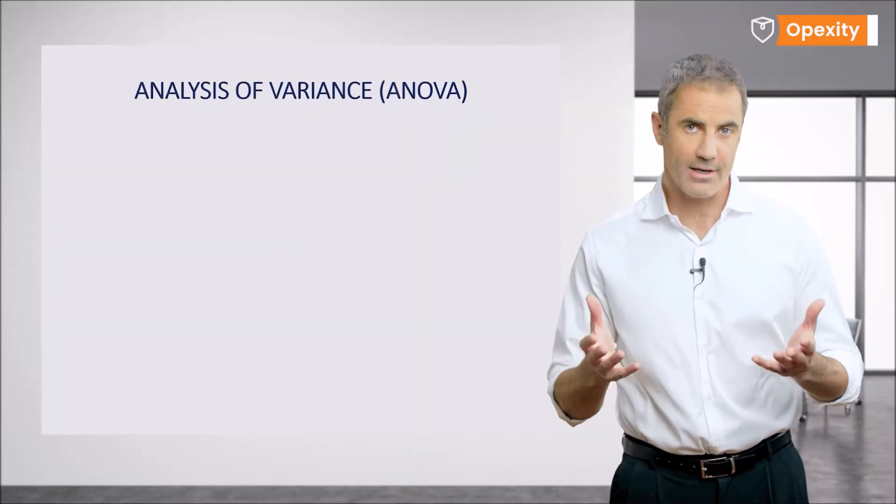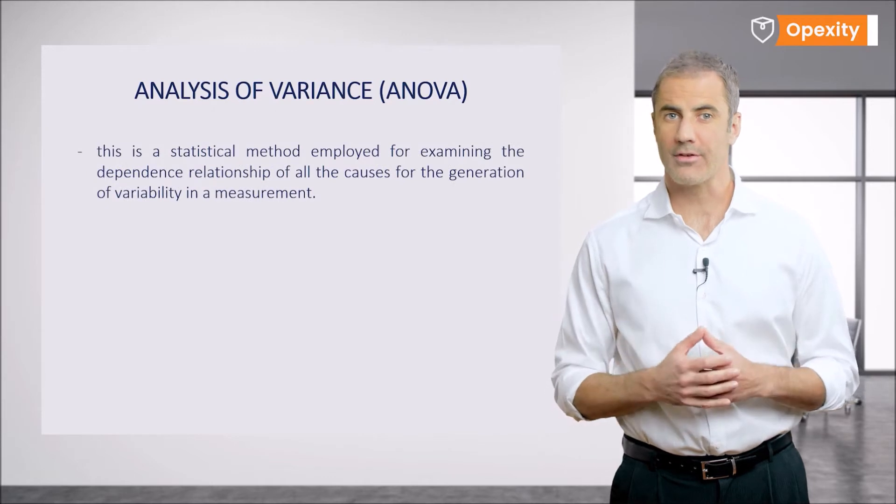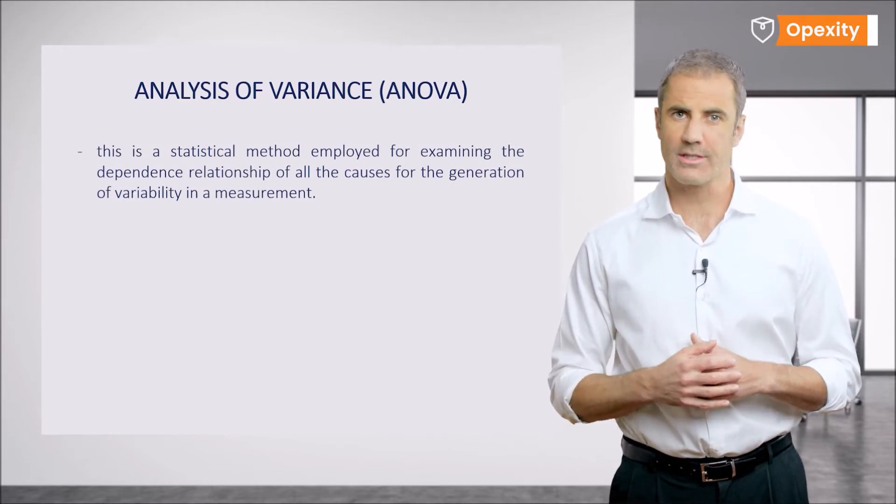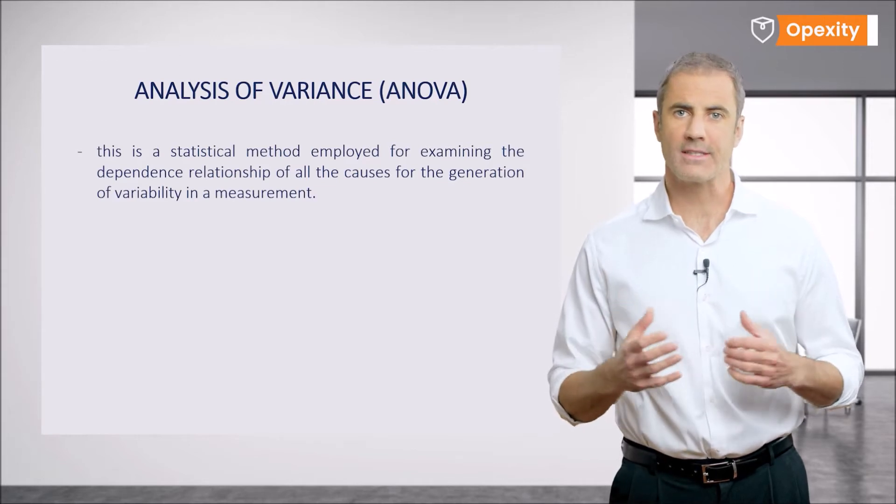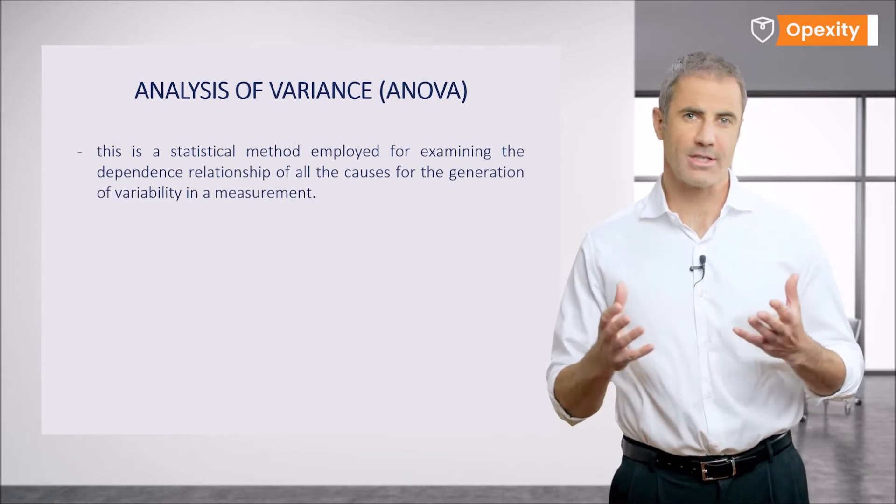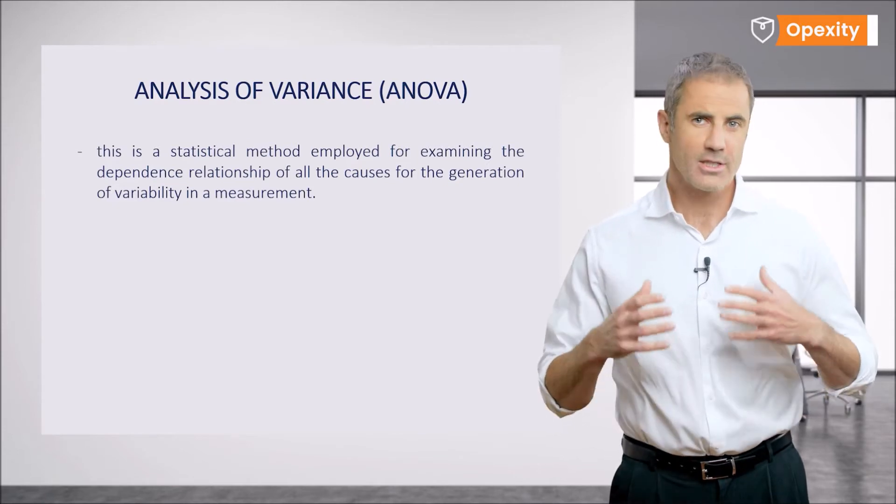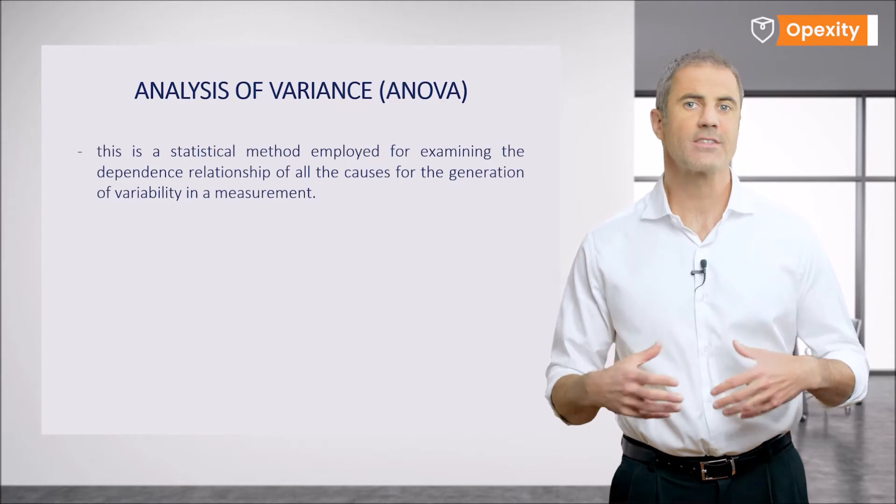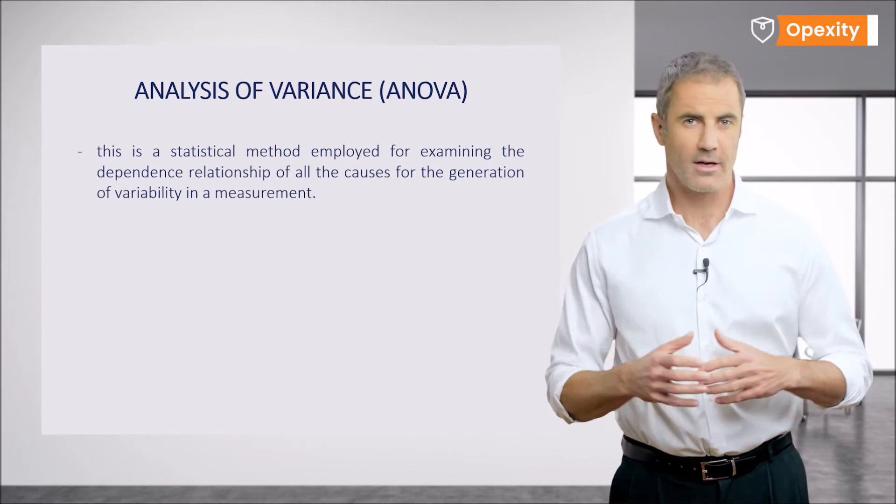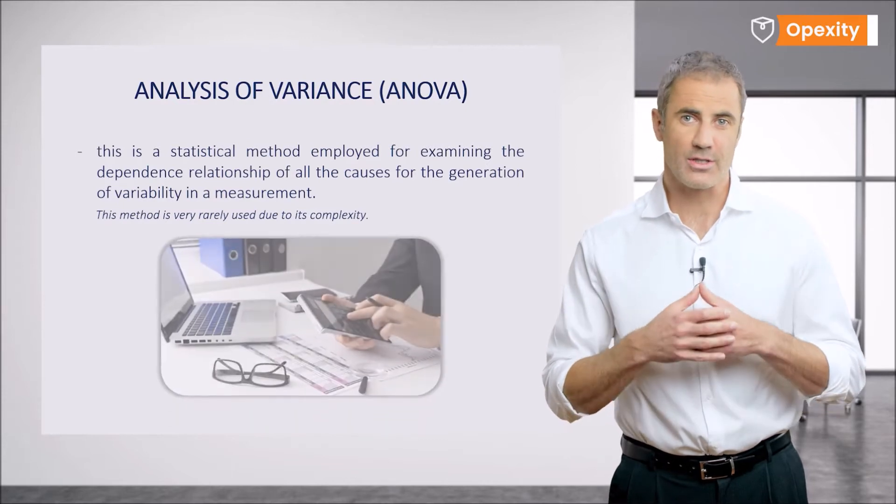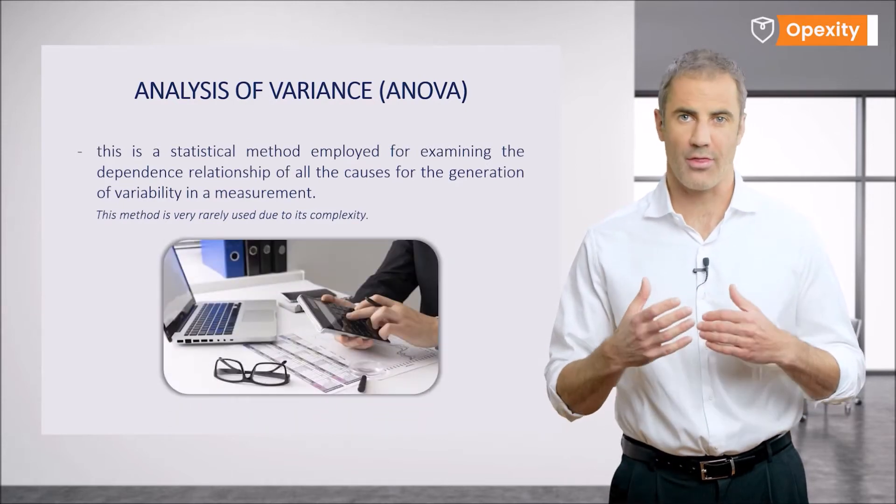Analysis of variance, ANOVA, is a statistical method employed for examining the dependence relationship of all the causes for the generation of variability in a measurement. This method was established in the 1920s. To put it simply, this method verifies whether the independent variable affects the dependent variable. Outside of science, this method is very rarely used due to its complexity and we will not discuss it thoroughly.